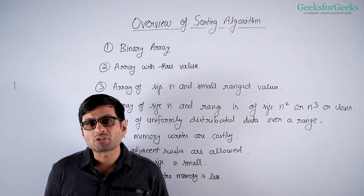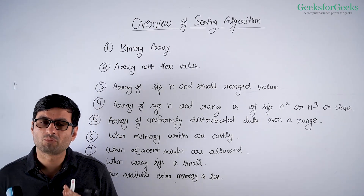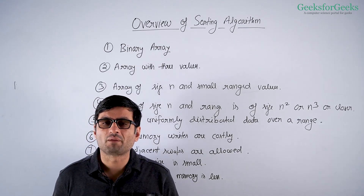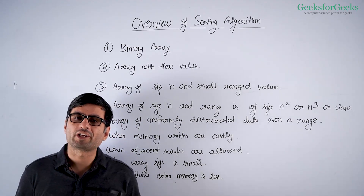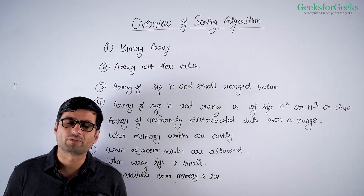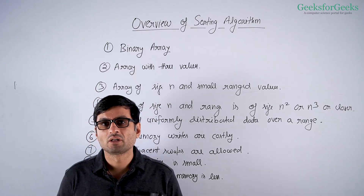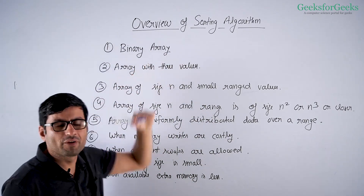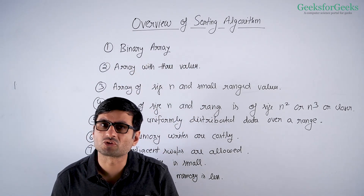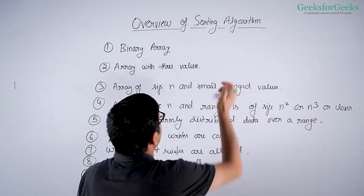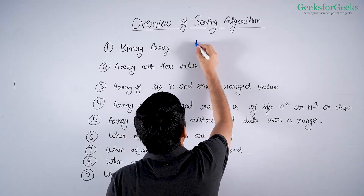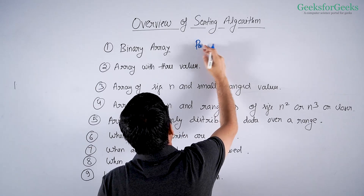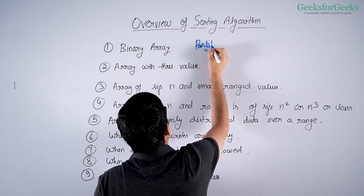Let's first talk about a simple sorting problem. We are given a binary array, or an array of two types of elements, and we need to sort it. We have talked about this problem in a separate video. This problem is solved using the partition algorithm of quicksort, so it's efficiently solvable using the partition algorithm.